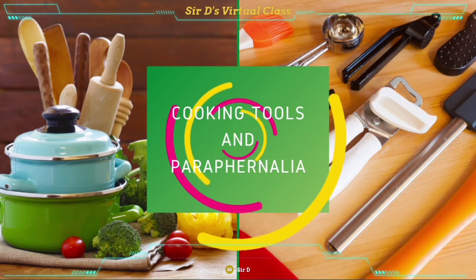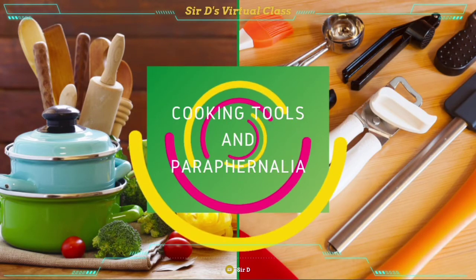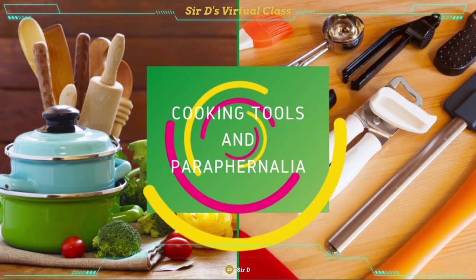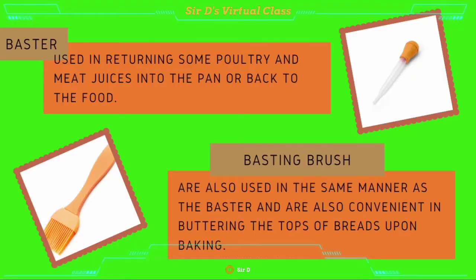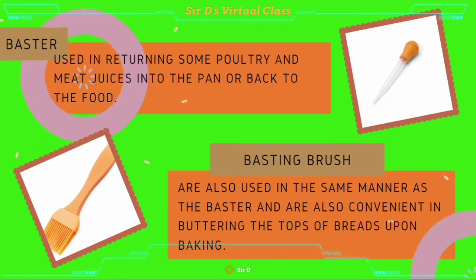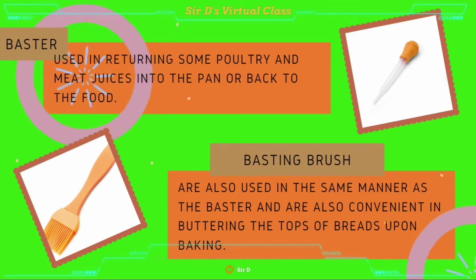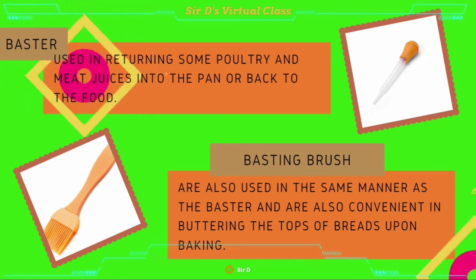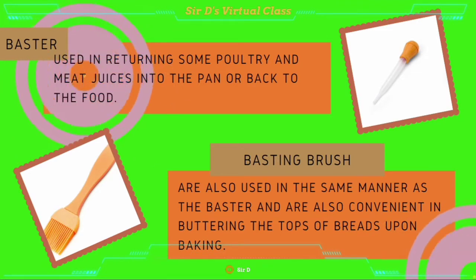The following are the utensils which are considered essential for every kitchen and home cooks. Baster, used in returning some poultry and meat juices back to the food, just like when we're cooking turkey or chicken. Basting brush, also used in the same manner as the baster, and is also convenient in buttering the tops of breads upon baking.